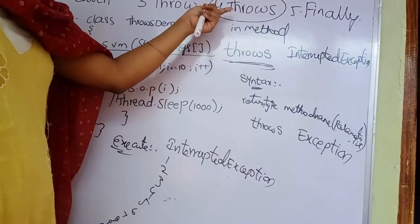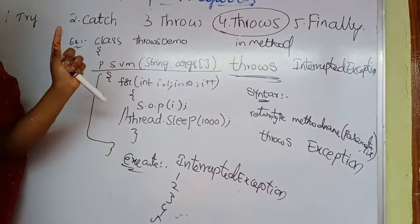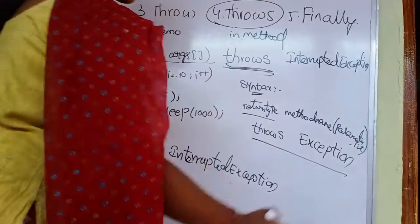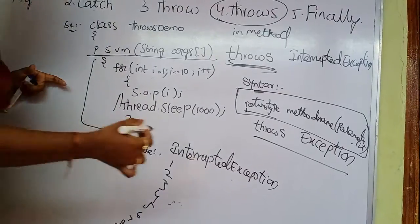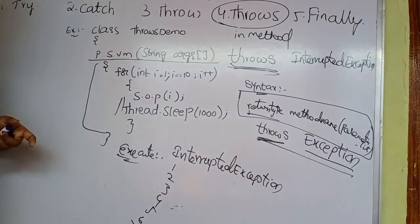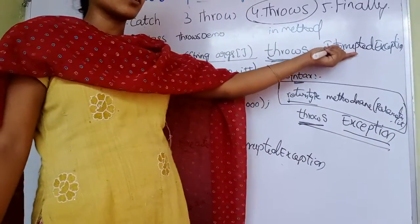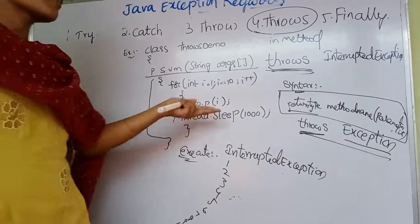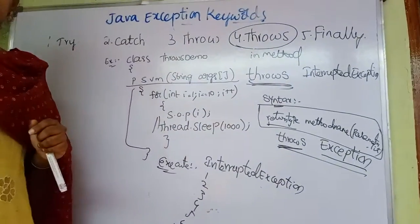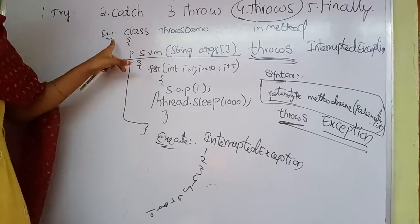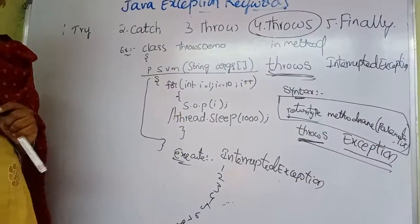The main purpose of the throws keyword is to handle exceptions in a method. We use the throws keyword to handle exceptions inside a method. In the previous example we had InterruptedException, so we wrote InterruptedException. If in case it is an ArithmeticException, we can throw ArithmeticException. Whether it is an IOException, we can throw IOException. Based on that exception, we can throw that exception in the method.